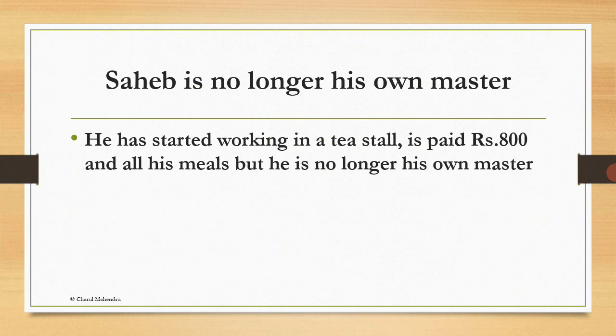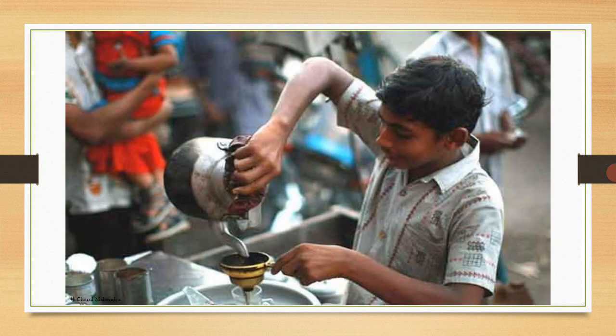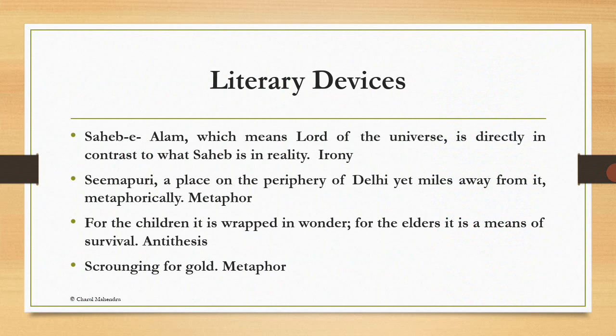Sahib is no longer his own master. On her next encounter, Anish Jung comes across Sahib as an employee in a tea stall doing hard work. He has started working for rupees 800 and all his meals, but he is no longer his own master. This picture is showing Sahib working in a tea stall, planning to sell tea.